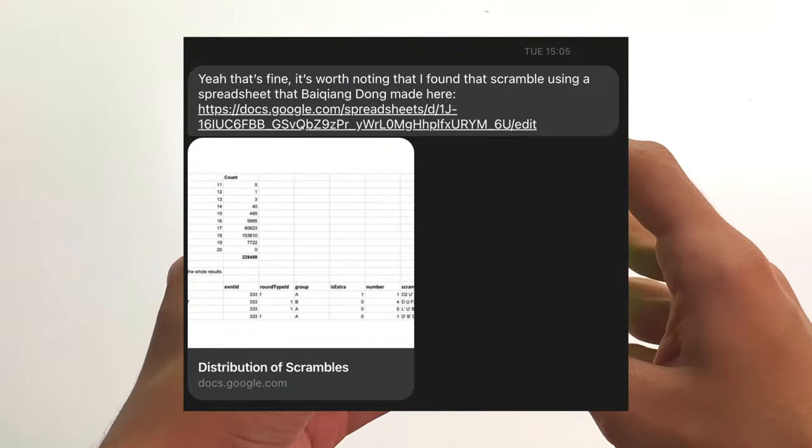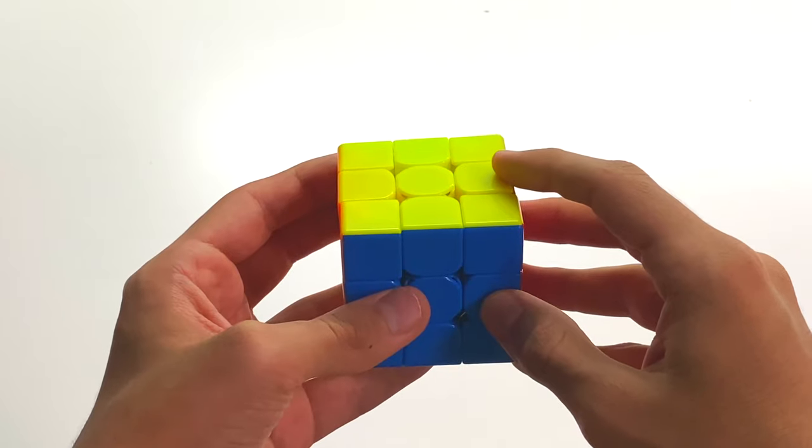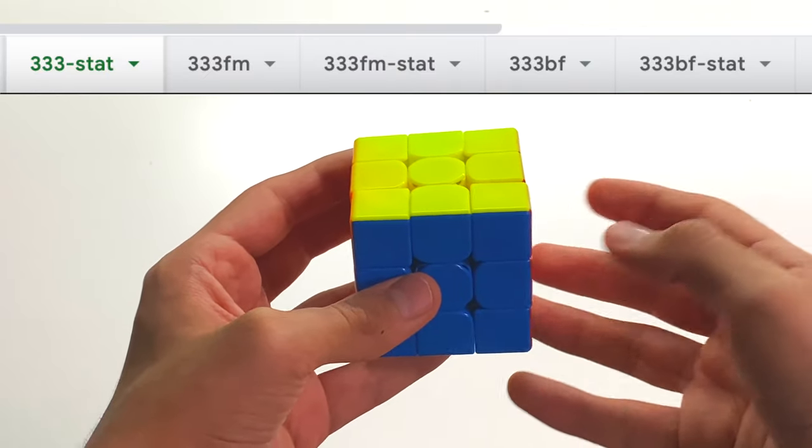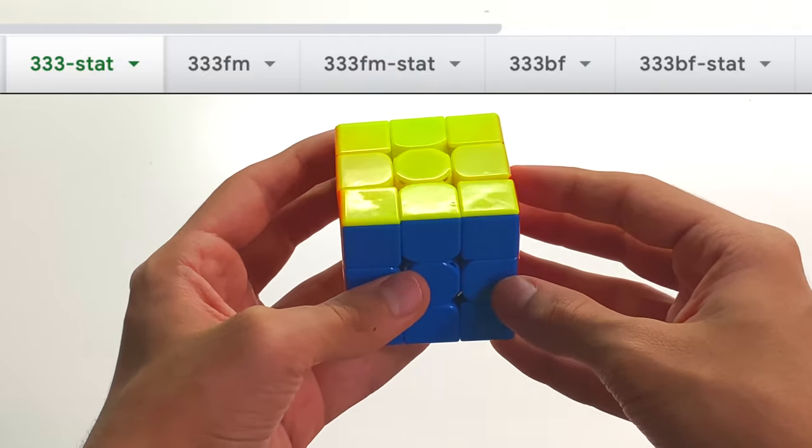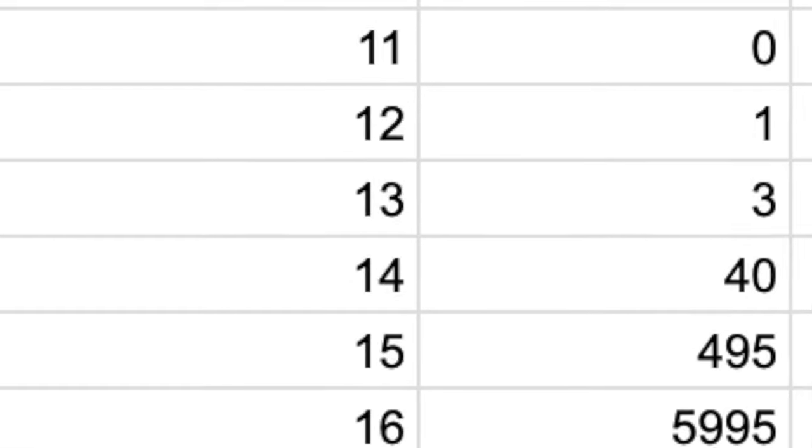And he also linked me to this document right here. I'll link this document in the description below. However, it contains statistics about basically lucky 3x3 FMC and blindfolded scrambles. Through this document I also found out that there's been two other 13-move official scrambles and actually one 12-mover in an official comp.